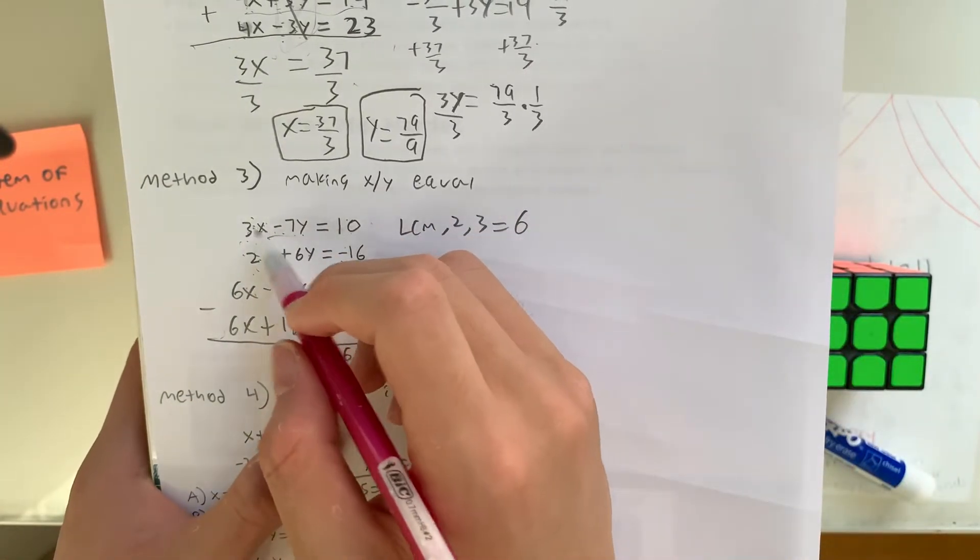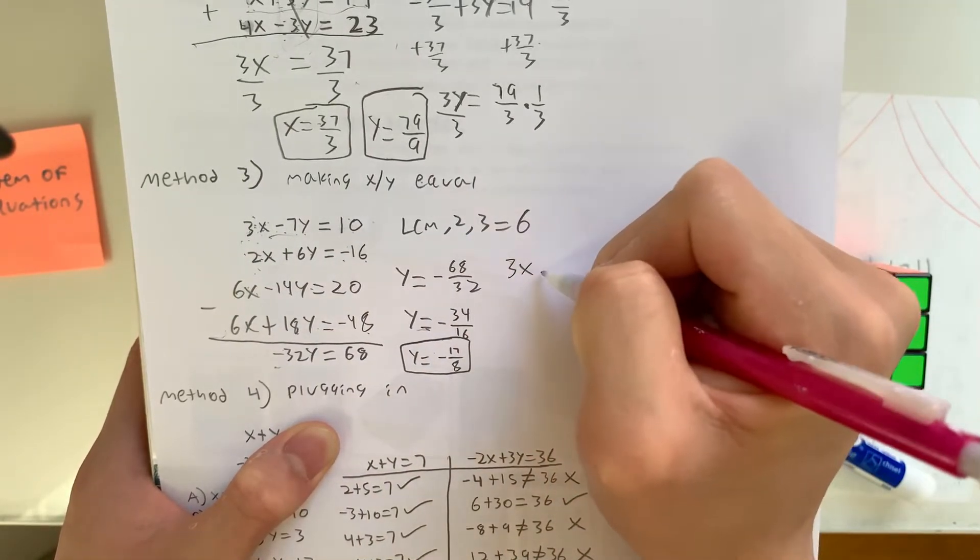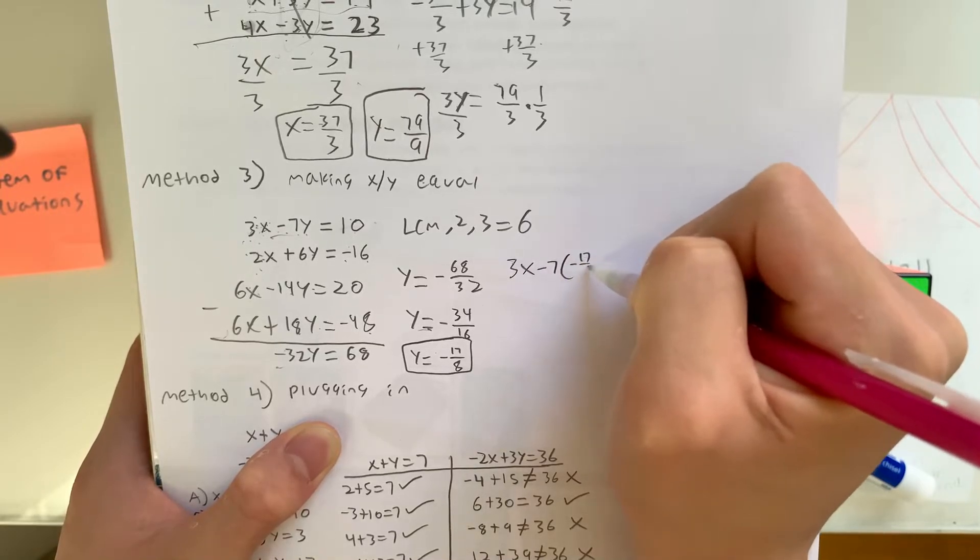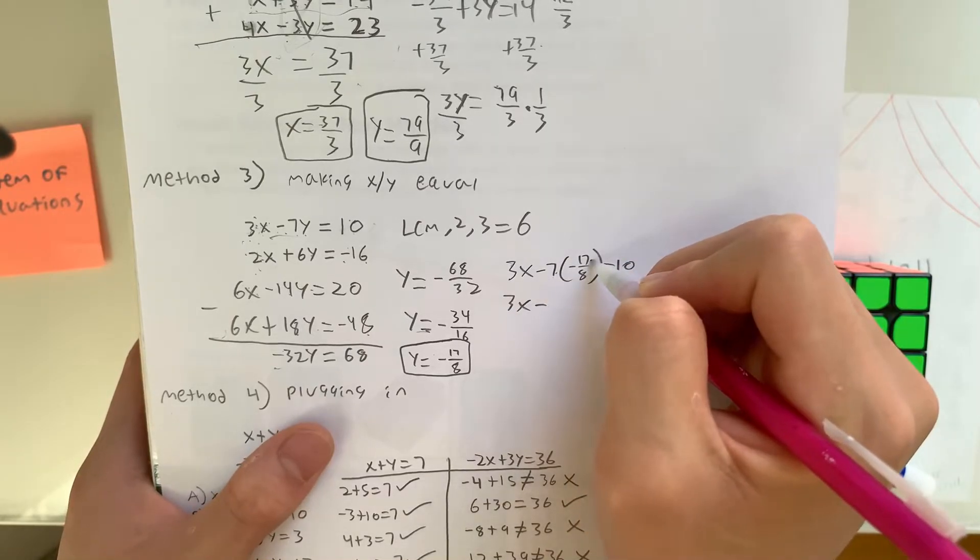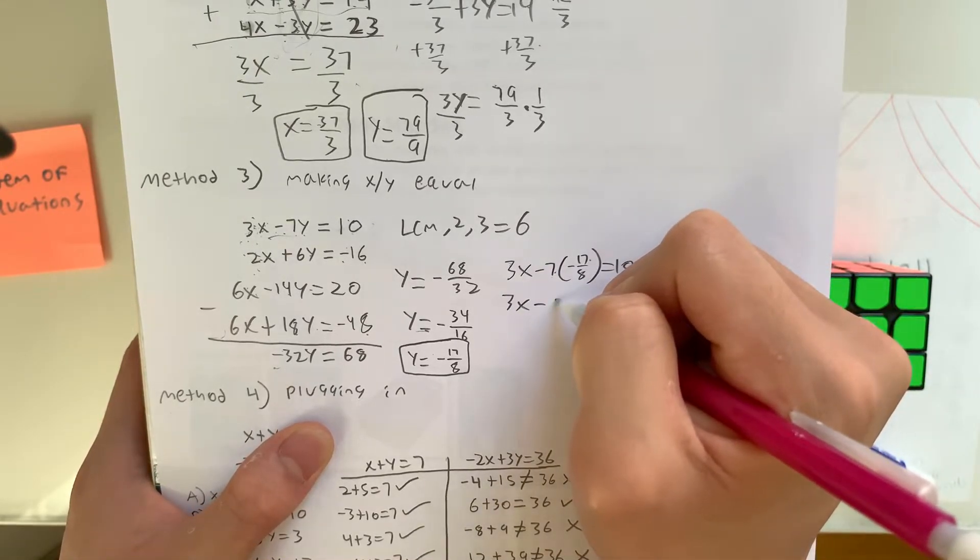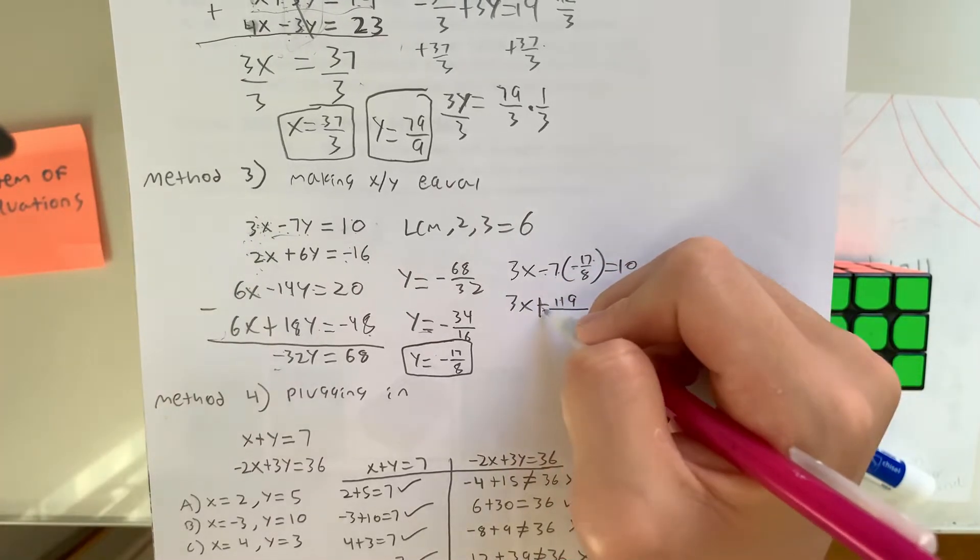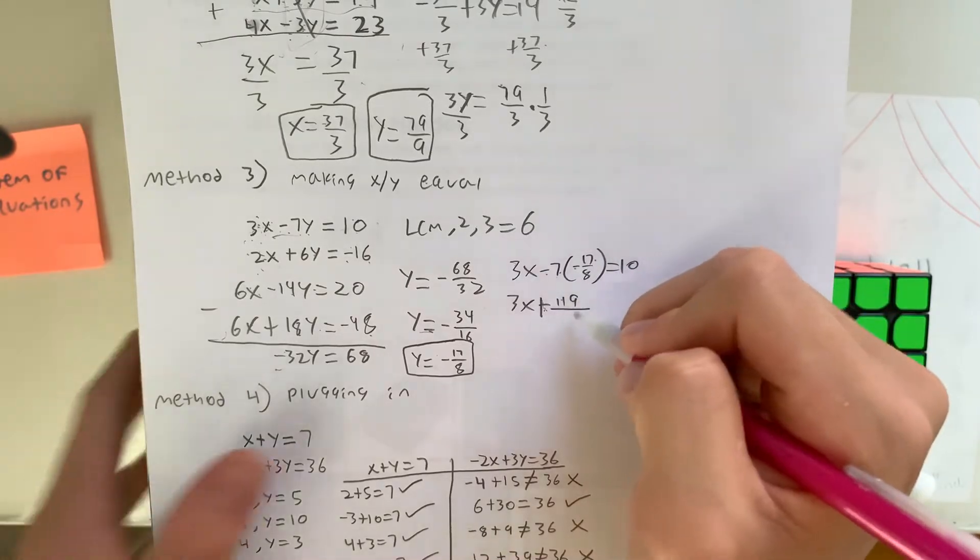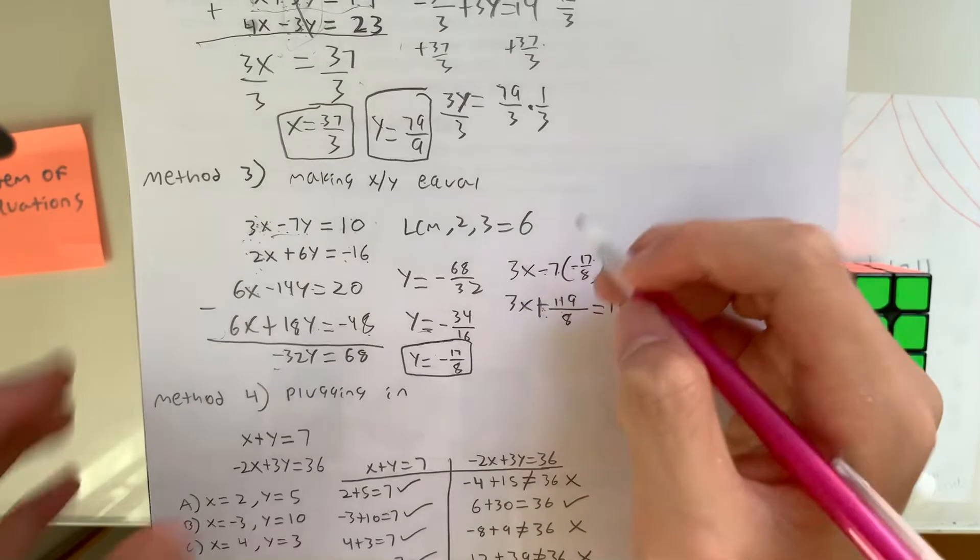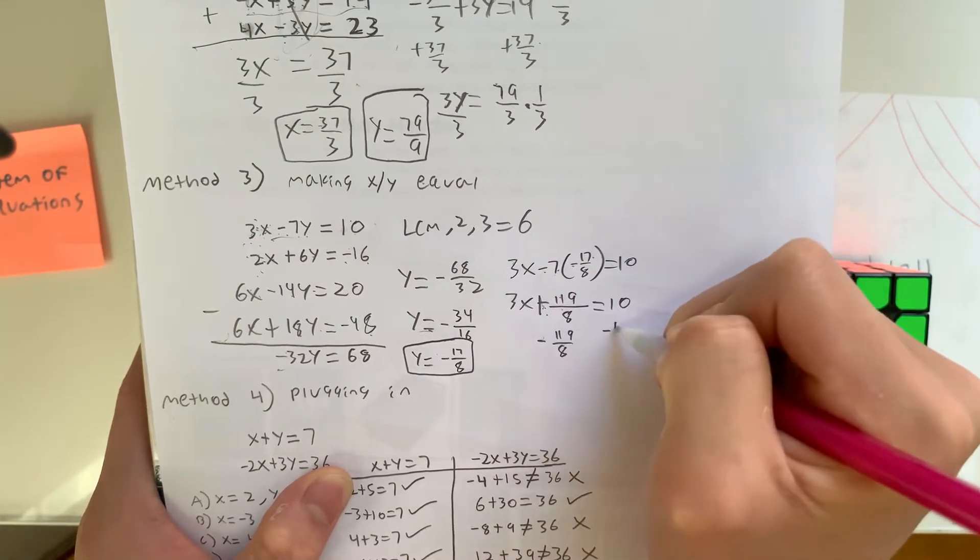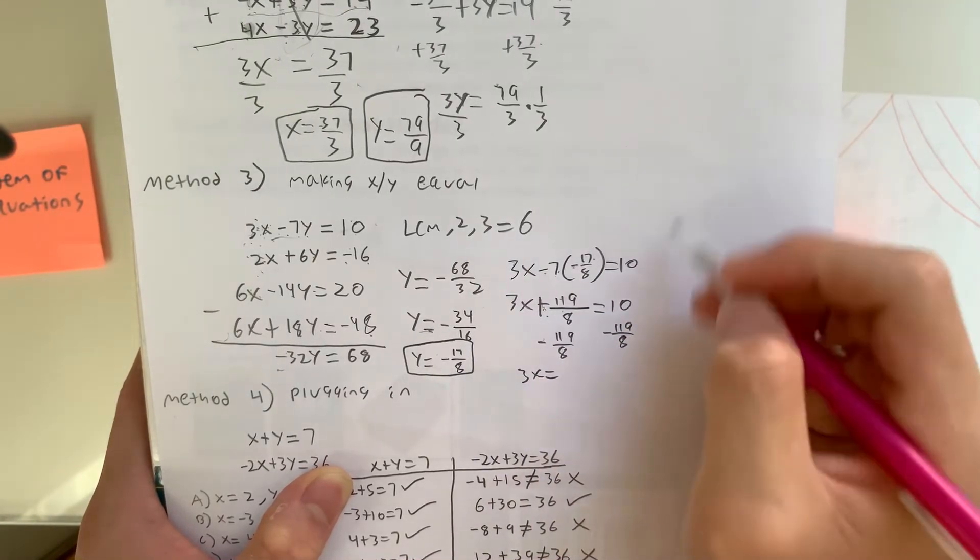We could plug in y. So 3x minus 7 times negative 17 over 8 equals 10. 3x minus, what's 7 times 17? That equals 119. Because negative times negative is positive, therefore we have a positive 119 over 8 equals 10. And we could subtract 119 over 8 from both sides.